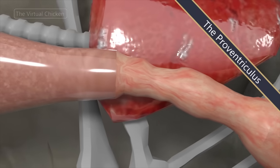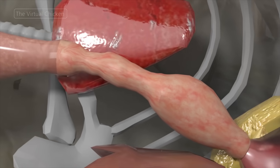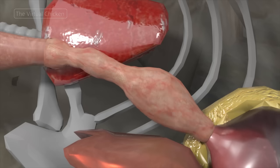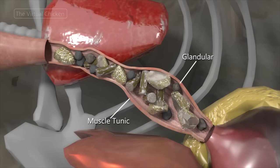After the food leaves the crop via peristaltic action, it moves into the proventriculus. Also known as the true stomach, the proventriculus is where actual digestion begins. The walls of the proventriculus are thick and composed of five layers: a muscle layer itself composed of three individual layers, a thick layer of glandular tissue, and the inner mucous membrane layer.